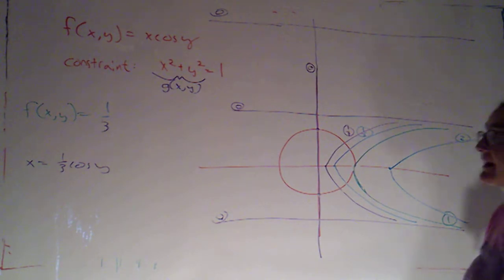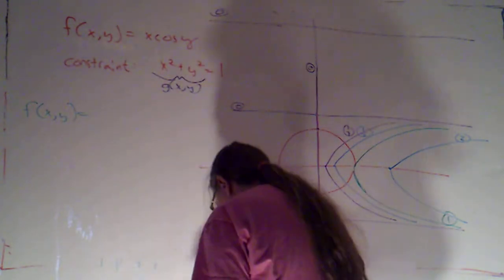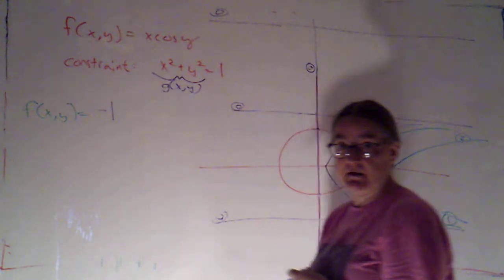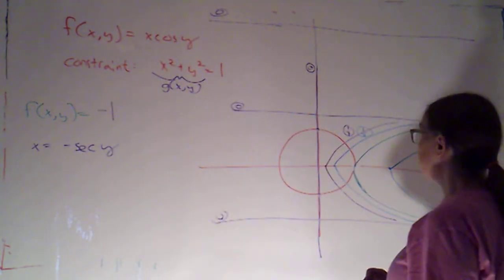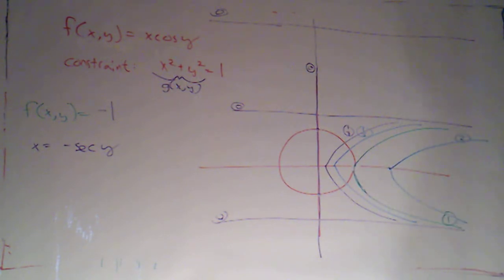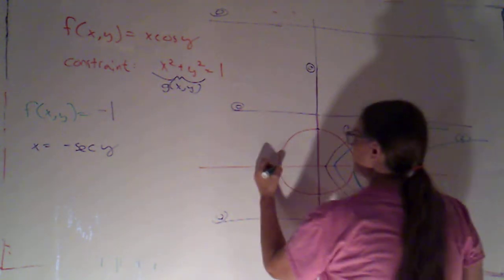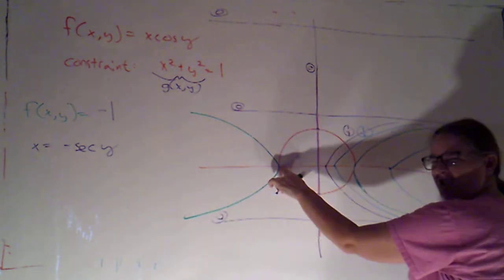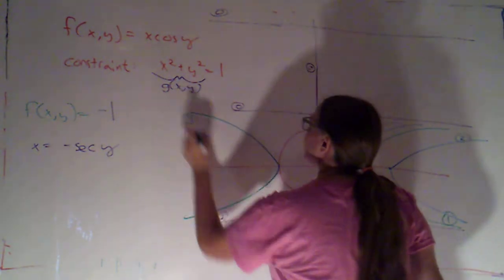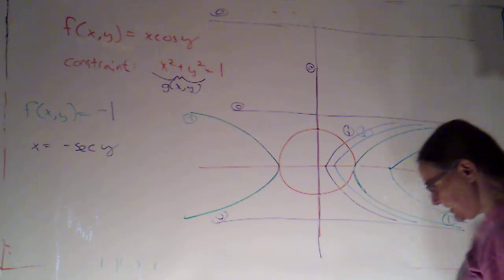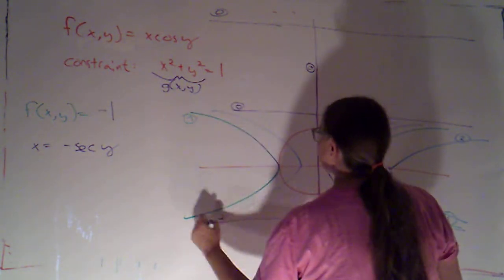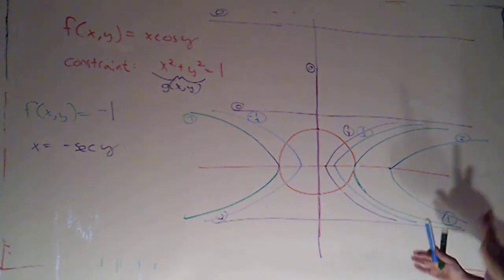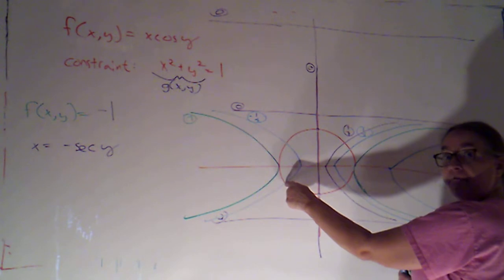Now let's look at a couple of negative values. For F of x, y equals negative one, x equals negative secant of y. That takes my level curve for one and reflects it over the y-axis, so it just touches the circle at negative one, zero. For negative one half, x equals negative one-half secant y — similar shape reflected — and it intersects the circle at two points where f takes on a value of negative one half.